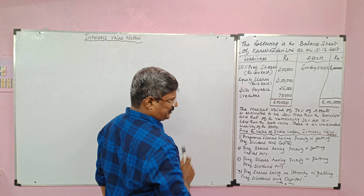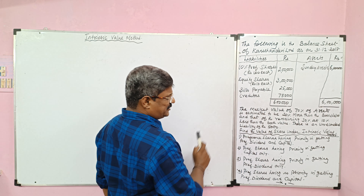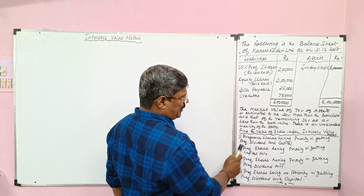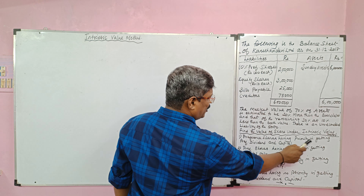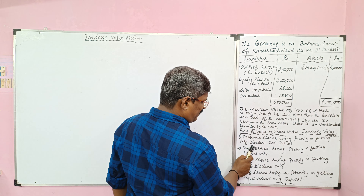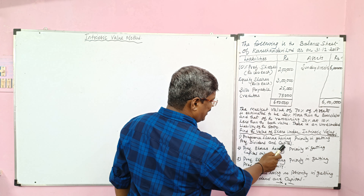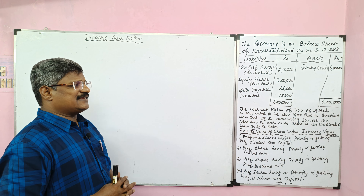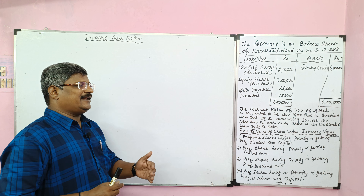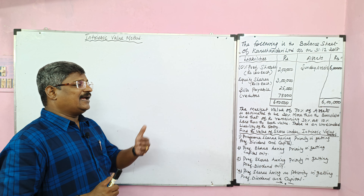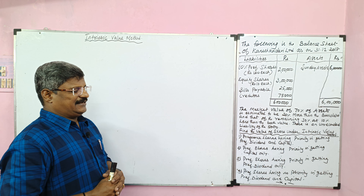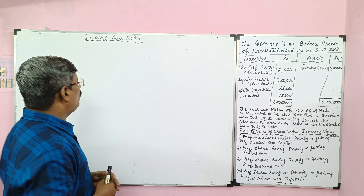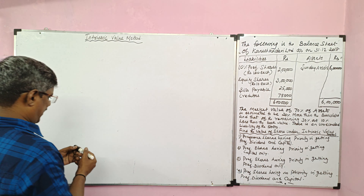Since preference share capital is given, there are four situations. Situation number one: preference shares having priority in getting preference dividend and capital. First, we'll find the net assets.